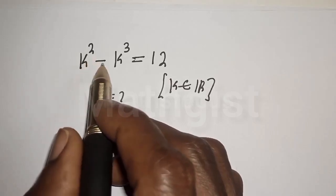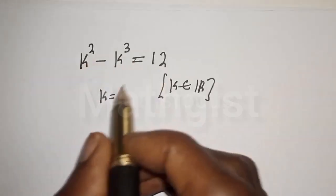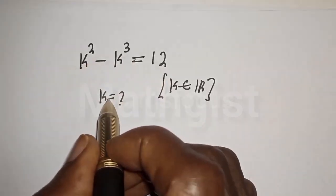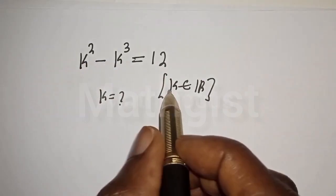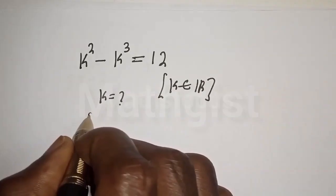k squared minus k raised to power 3 is equal to 12. What is the value of k, where k is a member of the real numbers?